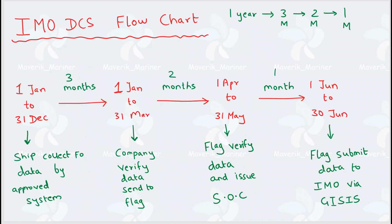Now let us see the IMO DCS flowchart. From 1st January 2019 to 31st December, the ship is going to collect fuel oil data using a flag-approved system — meaning the system which has a Certificate of Compliance. After one full year, the ship sends the data to the company, and the company verifies the data over the next 3 months.